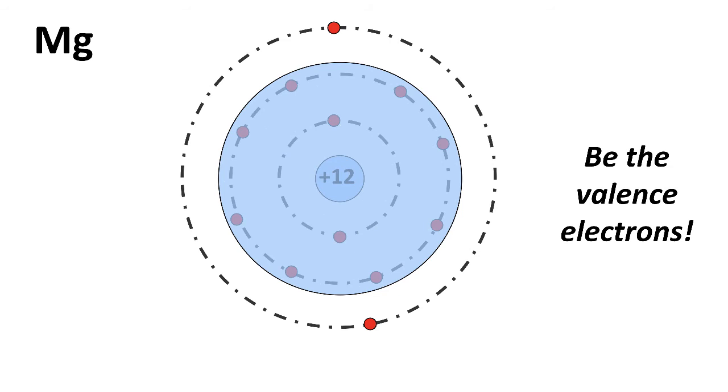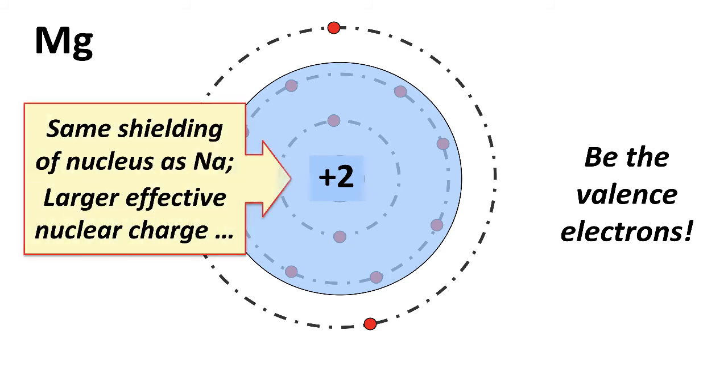If we do this very rough shielding idea, we have a positive charge of 12 due to the nucleus, negative 10 due to the 10 inner shell electrons, and that gives us a bigger effective nuclear charge than for magnesium. So we have a very rough effective nuclear charge of plus two.